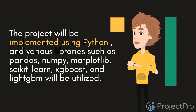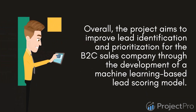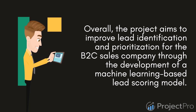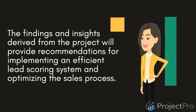The project will be implemented using Python, with libraries such as pandas, NumPy, matplotlib, scikit-learn, XGBoost, and LightGBM. Overall, the project aims to improve lead identification and prioritization for the B2C sales company through a machine learning based lead scoring model. The findings and insights will provide recommendations for implementing an efficient lead scoring system and optimizing the sales process.